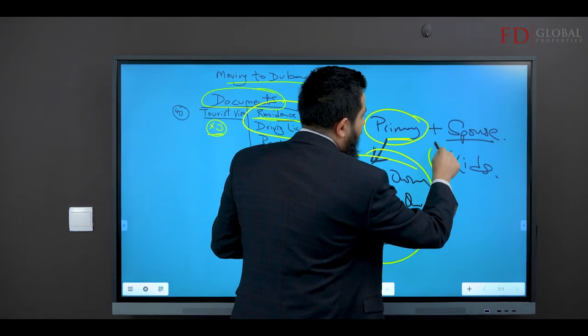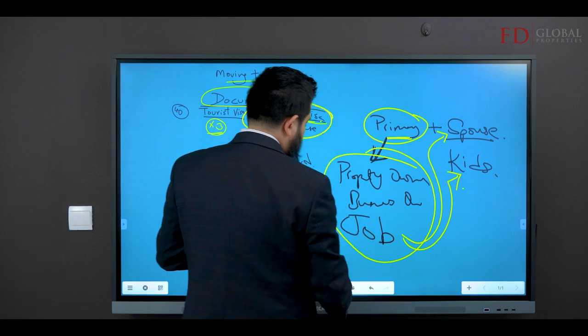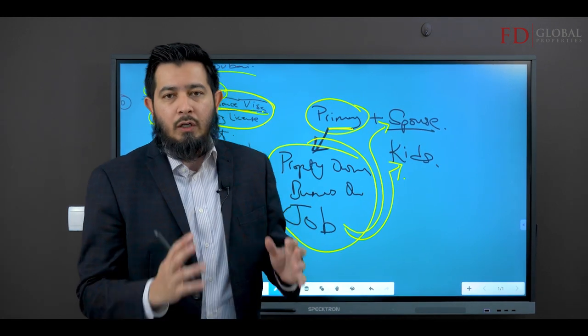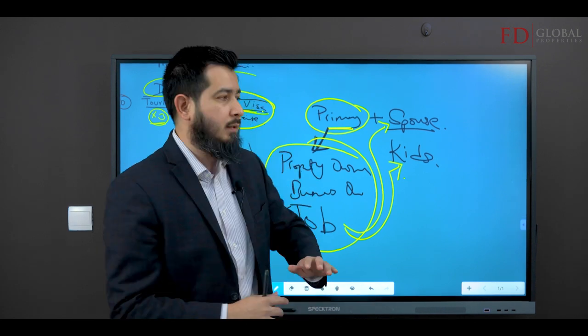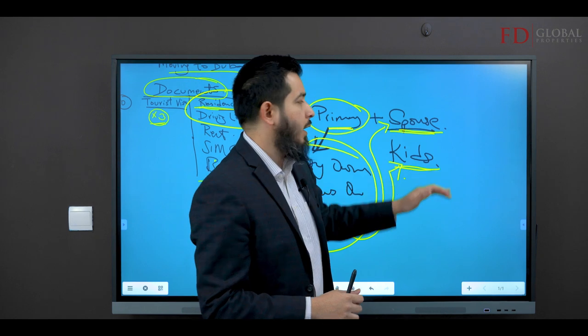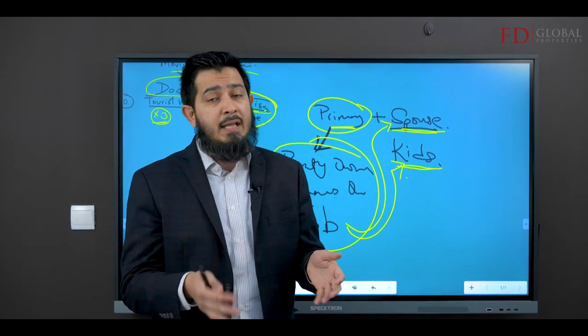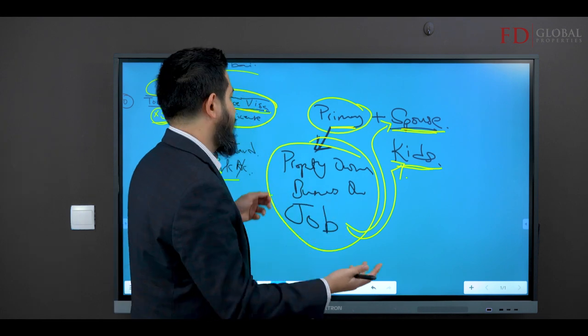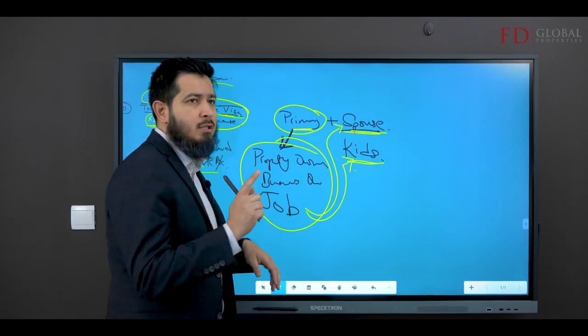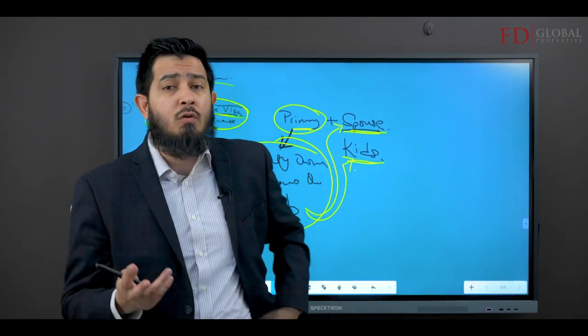That residence visa does not automatically transcribe to your kids. What do you need to do for that to go to your children is you've got to prove that your spouse is actually your spouse and your children are actually your children. Now you might say that's pretty easy to do. How do you prove that your spouse is your spouse?